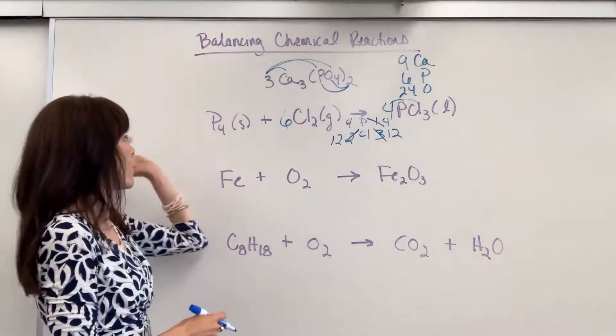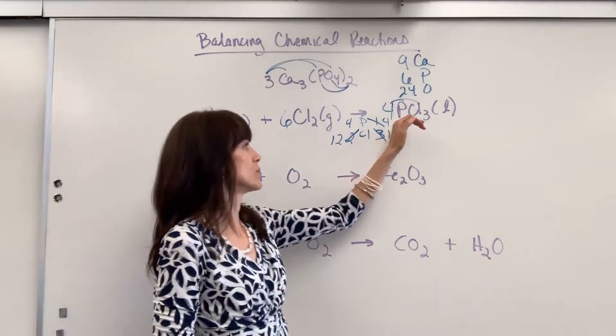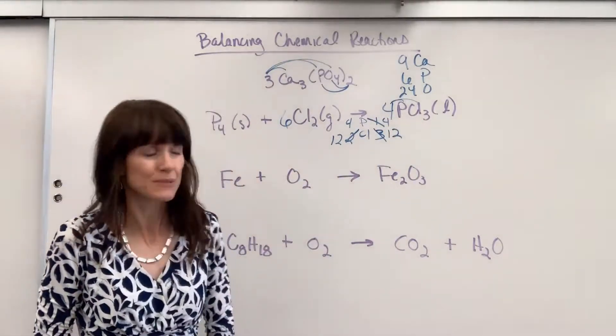And the way you read this, one mole of P4 plus six moles of chlorine gas yields four moles of phosphorus trichloride.